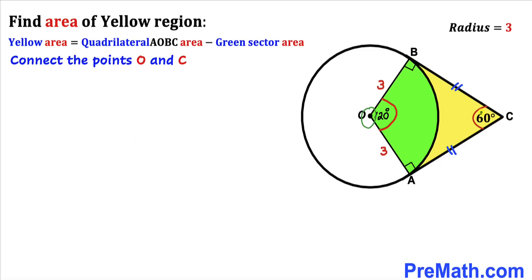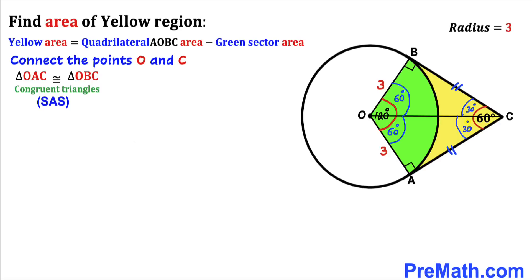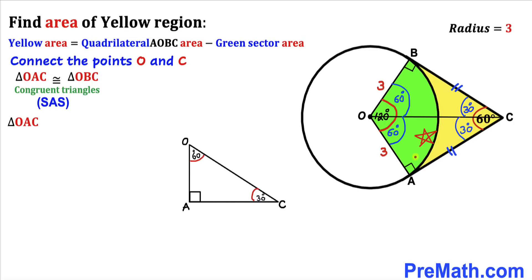Let's connect center O with point C. As a result, we can see that right triangles OAC and OBC are congruent by the Side-Angle-Side congruency theorem — the radii are equal and the 90-degree angles are between those sides. Since these triangles are congruent, angle AOC equals angle BOC, so each is 60 degrees. This also gives us angles OCA and OCB each equal to 30 degrees.